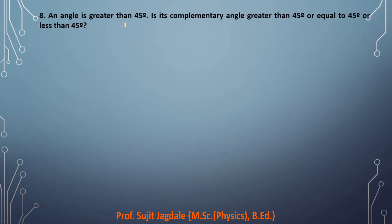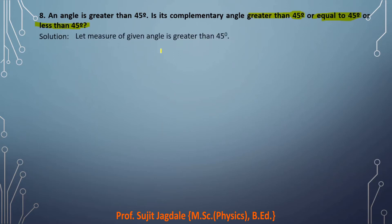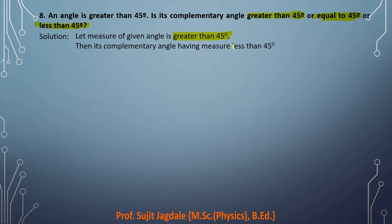Question 8: An angle is greater than 45 degrees. Is its complementary angle greater than, equal to, or less than 45 degrees? Complementary means their addition should be 90 degrees. If the given angle is greater than 45 degrees, then obviously its complementary angle will be less than 45 degrees — otherwise they would not be complementary.